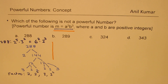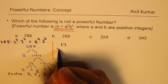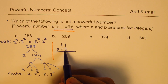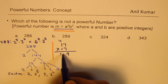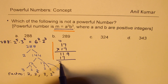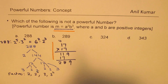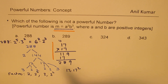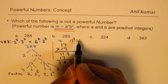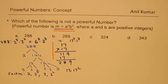Now 289. Well, 289 is 17 times 17, so 17 squared is 289. So 17 is a factor and 17 squared is also a factor. Any perfect square will be a powerful number. We could always write this as 17 squared times 1 cubed, where b equals 1.